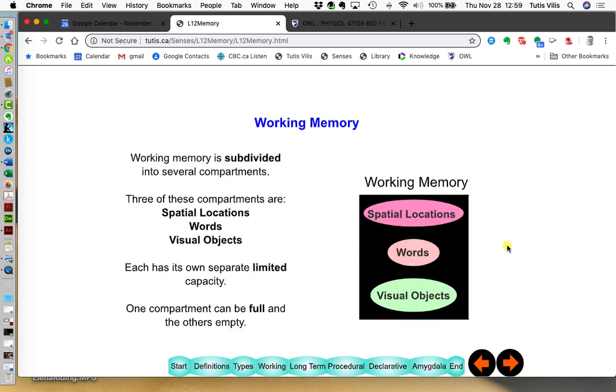So, we have working memory, but we have compartments. So, we have a compartment for words. We have a compartment for spatial locations. And we have a compartment for visual objects, things that you see around you at the moment. And the neat thing is that one compartment, like this word one, can be full. And you start emptying it when you see another word. But these ones can be empty, and you can add to them still.